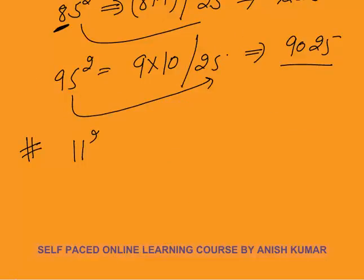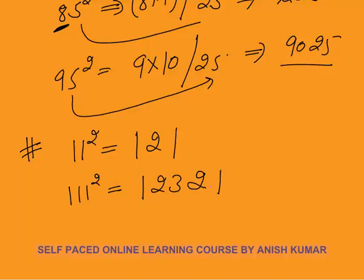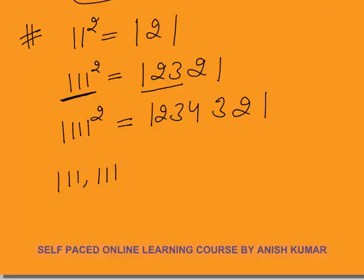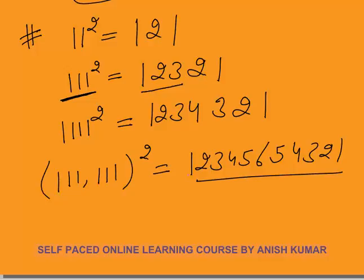Another useful shortcut: 11² = 121; 111² = 12321; 1111² = 1234321. The logic is that you count up from 1 to the number of 1's, then count back down. So for six 1's (111111²), you count 1-2-3-4-5-6 then back to 1: 12345654321.